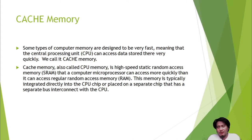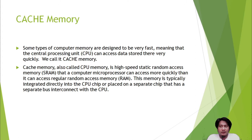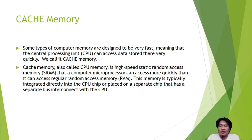The computer is not entirely dependent on cache memory, but with a larger cache memory, your computer may work faster. Cache memory is also called CPU memory — it is a high-speed static random access memory, or SRAM, that a computer microprocessor can access more quickly than regular RAM. This memory is typically integrated directly into the CPU chip or placed on a separate chip.